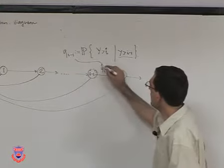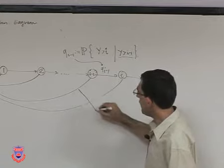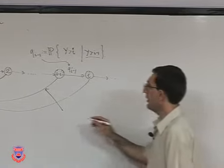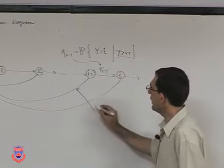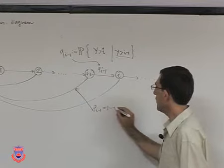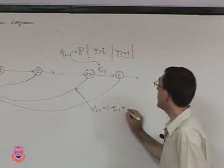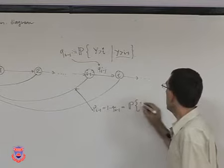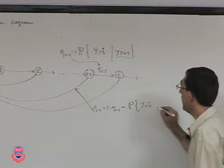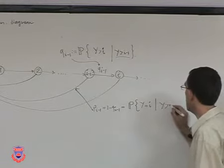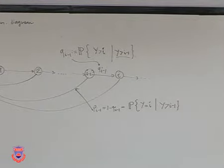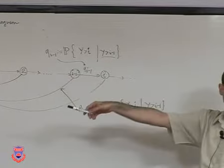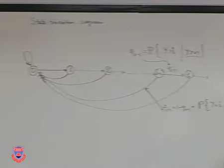This gives the transition from state i-1 to i. If the bulb does not survive one more period, it must have failed. So we denote P_{i-1} = 1 - Q_{i-1}, and this is the probability that Y equals i given Y is greater than i-1. In that case the bulb is of age i-1 and in the next period you have a brand new bulb in place.